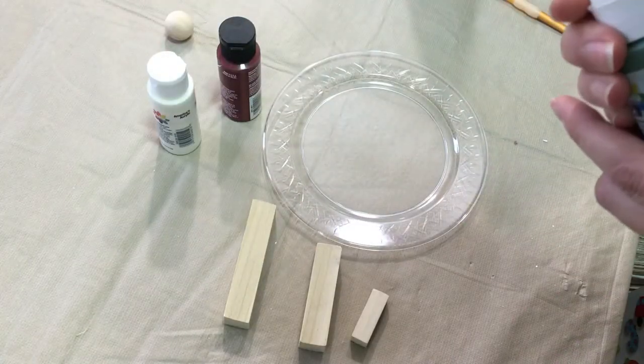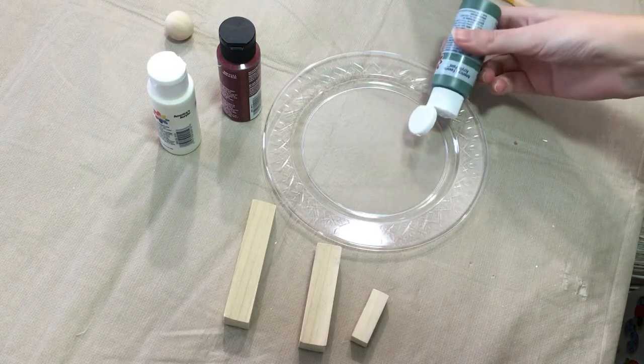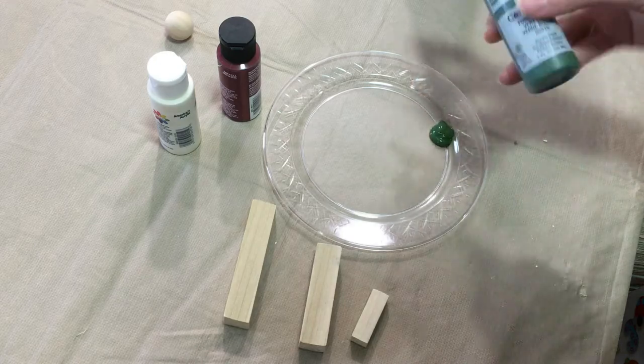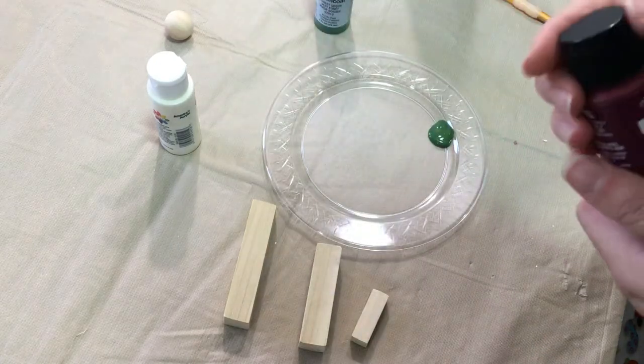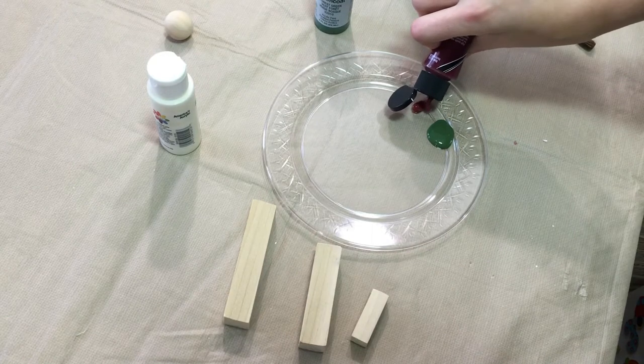We're going to go ahead and paint the bodies of our little manger scene people: Joseph, Mary, and Baby Jesus. I'm using green for Joseph, red for Mary, and off-white for Jesus. Actually, it's kind of like a burgundy for Mary.